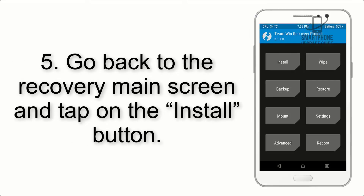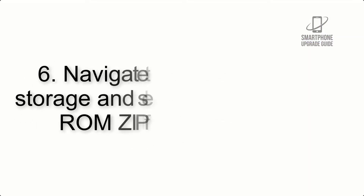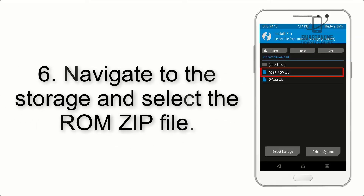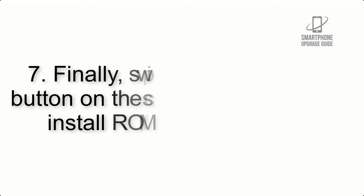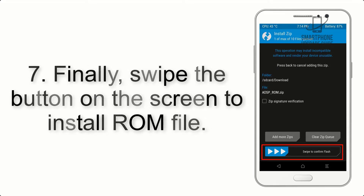Step 4: Swipe the button to wipe the device. Step 5: Go back to the recovery main screen and tap on the Install button. Step 6: Navigate to the storage and select the ROM zip file.